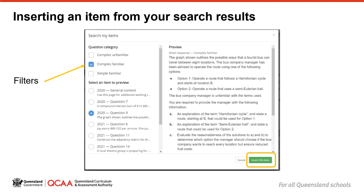I might also change the marks for this item, or the response space, using the Edit button for the question settings. You can add items this way to a blank assessment instrument template, or to an assessment instrument that was copied across from a previous year. The next video shows how to use the item search to insert a new item from a previously endorsed assessment instrument.